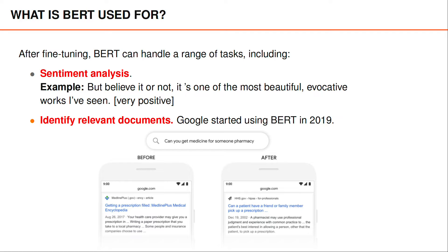Google has been using BERT to improve their search engine. Here is one example from one of their blogs, where they looked at the query 'Can you get medicine for someone at a pharmacy?' Before BERT, the first result was a page about how to get your prescription filled. After introducing BERT, the search engine picks up on the importance of the words 'for someone' in the query, and the first result is a page about the possibility for someone to pick up a prescription for a patient.